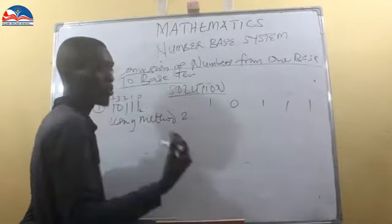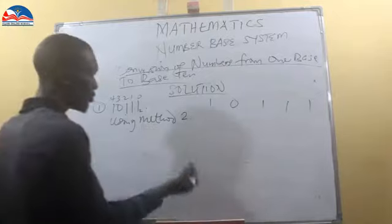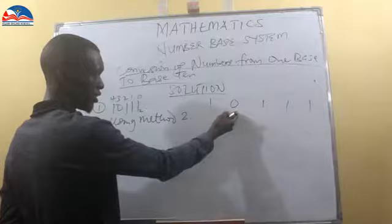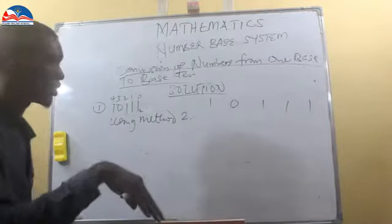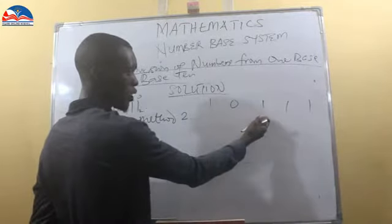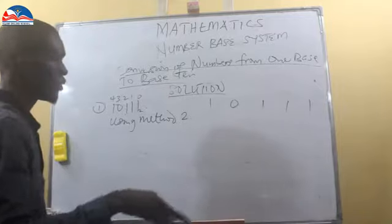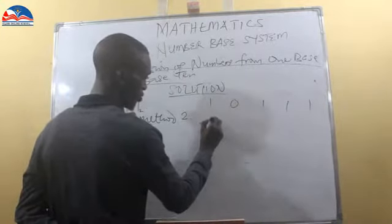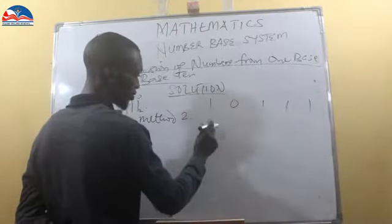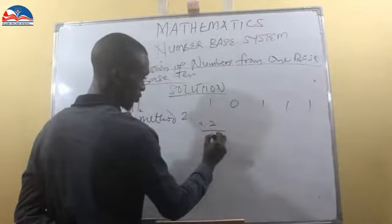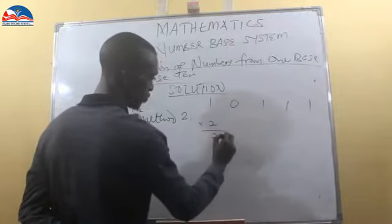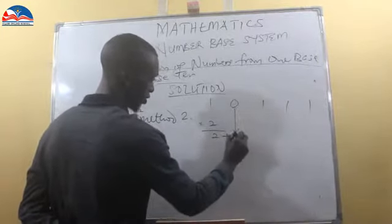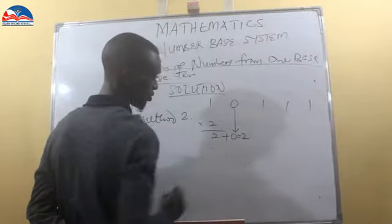When you multiply by 2, the result you add towards the next number, then multiply by 2 again progressively. So you have 1 times 2 gives us 2, 2 plus 0 gives us 2.